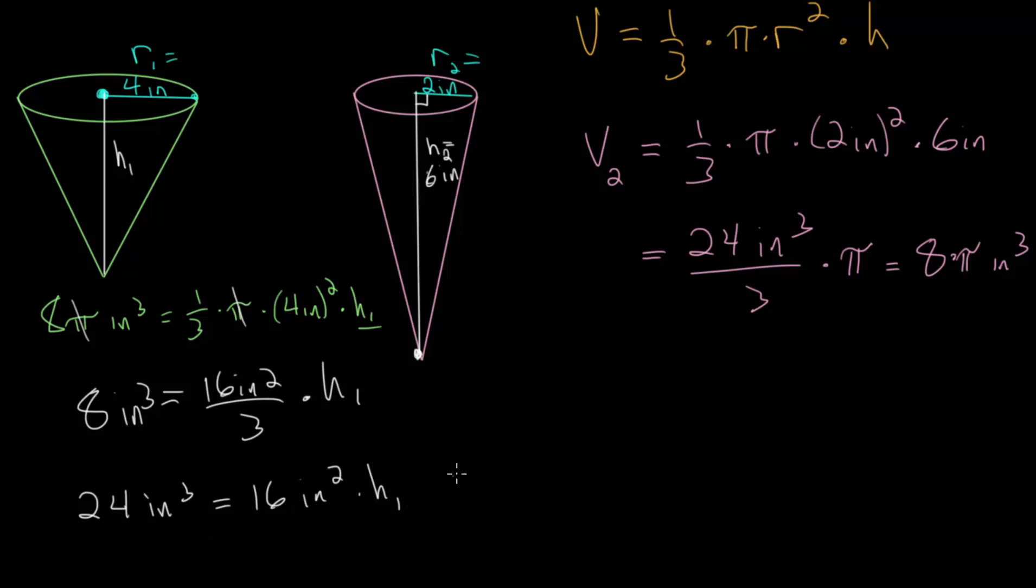Let's divide each side by 16 square inches, which leads us to 24 cubic inches divided by 16 square inches is equal to H1. Notice that we have inches cubed on top divided by inches squared. So two of those will cancel out and we'll be left with inches, which makes sense since we know the height is just a linear distance.